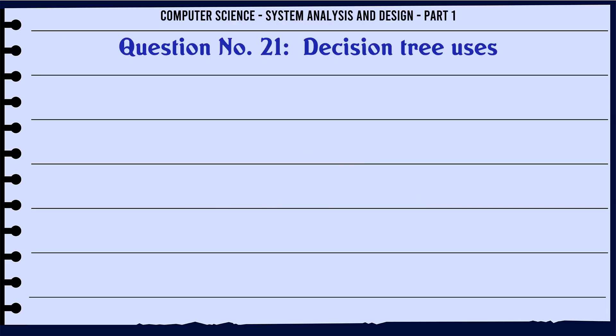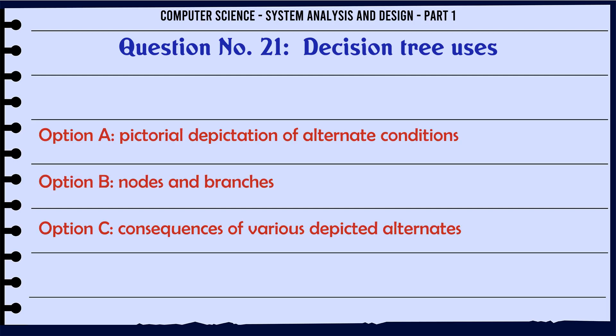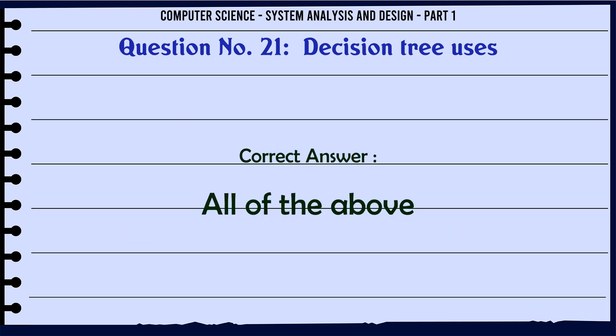Decision tree uses: A. Pictorial depiction of alternate conditions. B. Nodes and branches. C. Consequences of various depicted alternates. D. All of the above. The correct answer is: All of the above.